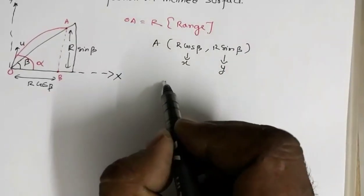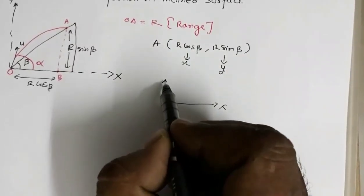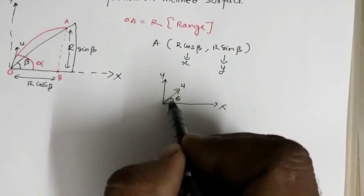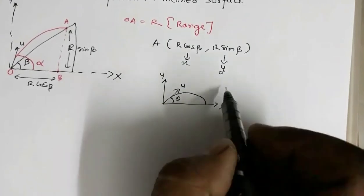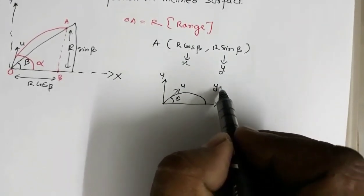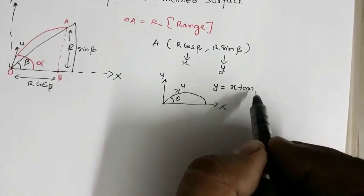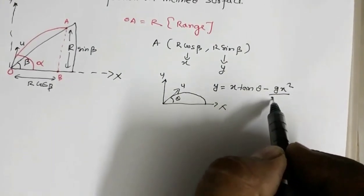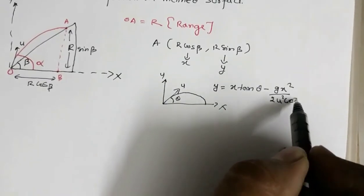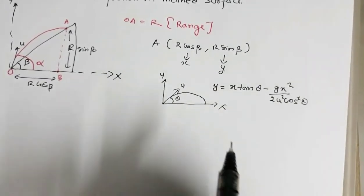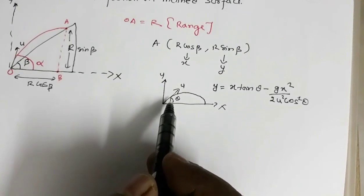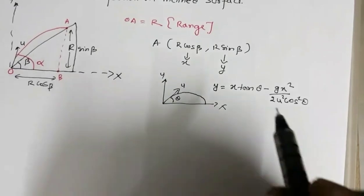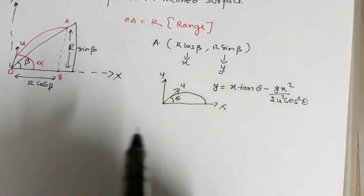For angular projection — if the projectile is projected with velocity u at an angle theta with the horizontal — the equation of trajectory is: y = x·tan(theta) minus g·x² divided by 2u²·cos²(theta). Here, theta is the angle made by the velocity vector with the x-axis. We will use this equation to find the range for our case.